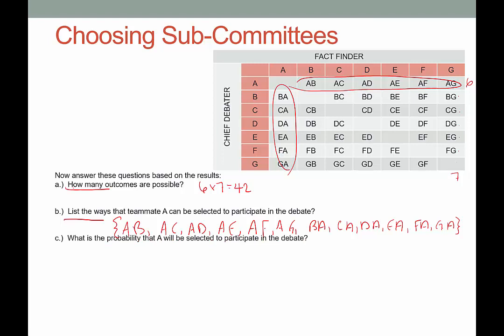Next question: what is the probability that A will be selected to participate in the debate? Probability is determined by the number of successes over the possible outcomes. The number of successes — we have them listed above: the successes are when Anna is chosen for something. How many successes are there? 1, 2, 3, 4, 5, 6, 7, 8, 9, 10, 11, 12. And possible outcomes — we already determined that's 42. So this is 12 out of 42, which simplifies to 2 out of 7.